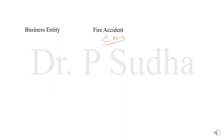This fire accident policy can be of two types: it can be a loss of stock policy or a loss of profit policy. In this video, we are going to see loss of stock only — that is, if the stock of the business gets damaged due to the fire accident, that loss of stock will be compensated by the insurance company.